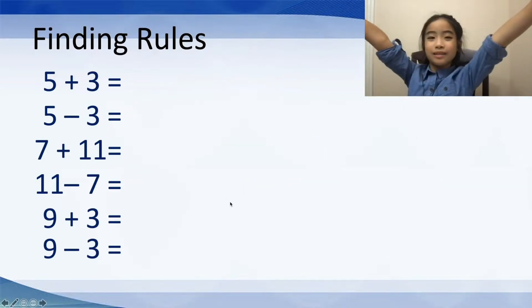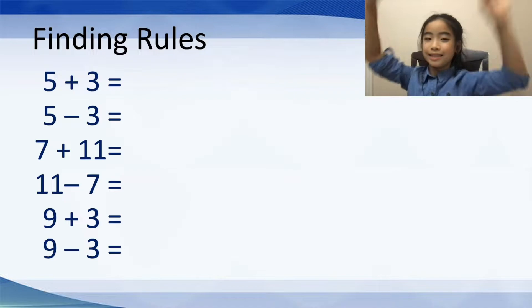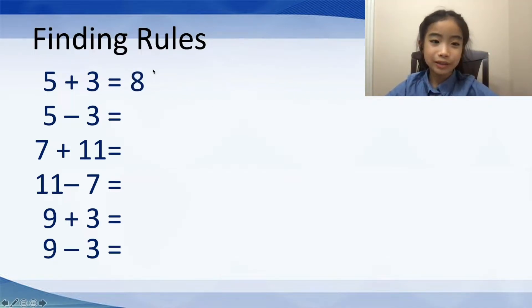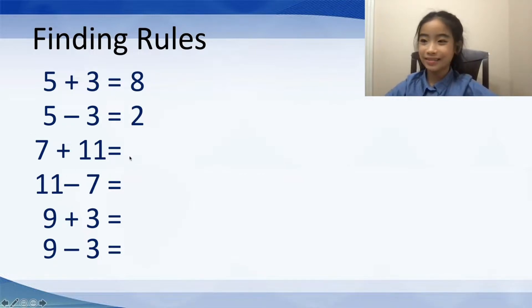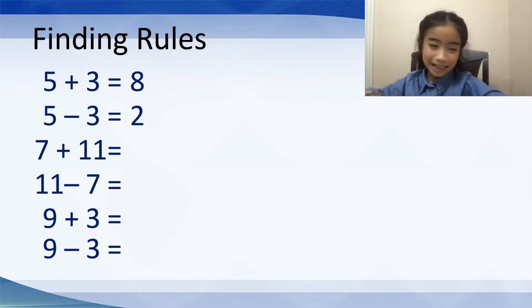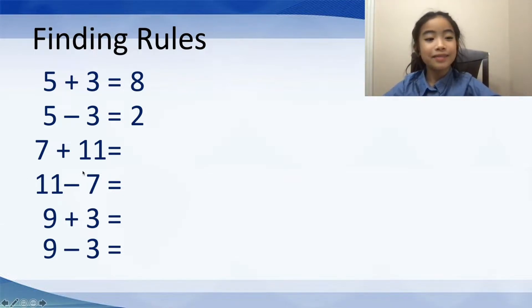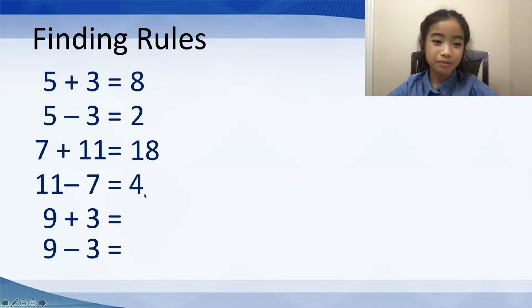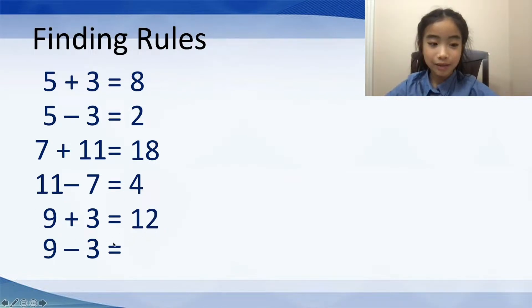Now let's move on to the next set of operations. We have 5 plus 3 equals 8, and 5 minus 3 equals 2. Then 7 plus 11 equals 18, and 11 minus 7 equals 4. Then 9 plus 3 equals 12, and 9 minus 3 equals 6.